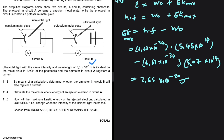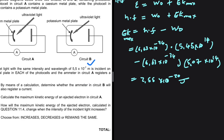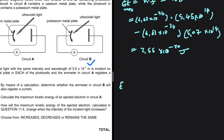For question 11.5: how will the maximum kinetic energy of the ejected electrons change when the intensity of the incident light increases? EK max equals energy minus work function, where energy depends on frequency and work function depends on threshold frequency — both multiplied by Planck's constant. Intensity does not appear in this equation and does not affect EK max in any way, so the answer is that it remains the same.